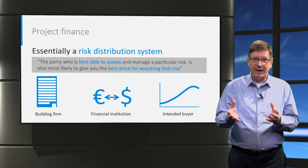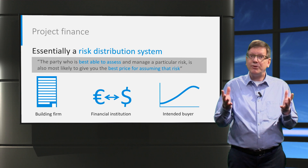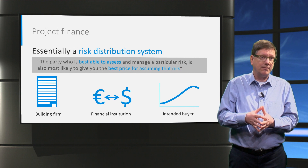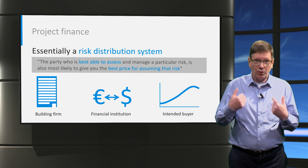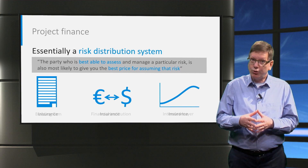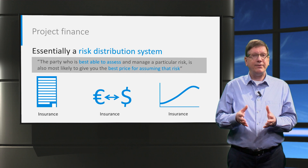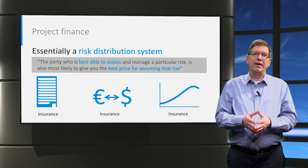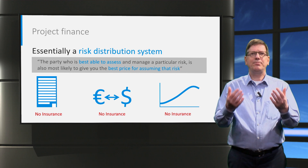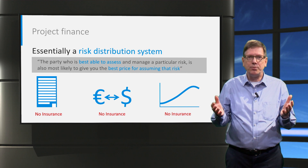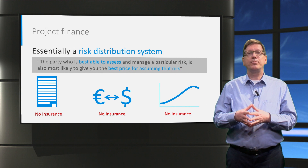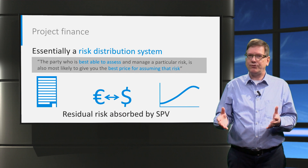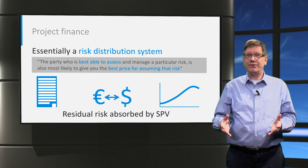The party who is best able to assess and manage a particular risk is also most likely to give you the best price for assuming that risk, because all risk transfers will cost the SPV money. If we can't find a contract party willing to assume a certain risk, we can try to insure that risk with an insurance company — for example, for the risk of an earthquake occurring. If insuring a risk turns out not to be possible, the SPV will be left with that risk, and we can only hope that such a residual risk does not block the project financing. If it does, a project may not be independently financeable unless we can get financial support, for example from a government or an international agency.